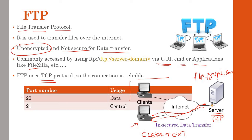FTP uses two port numbers: port 20 and port 21. Port 21 is the control port, used to access and control the FTP server. Port 20 is the data port, used to transfer files. So FTP has two port numbers — 21 for control and 20 for data.